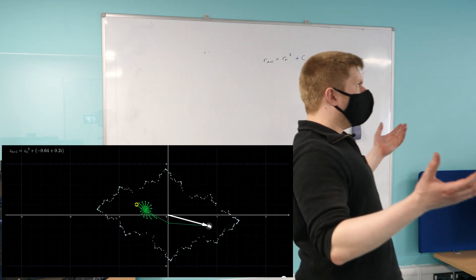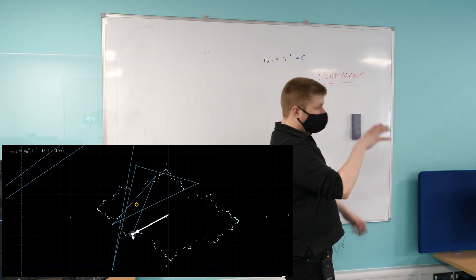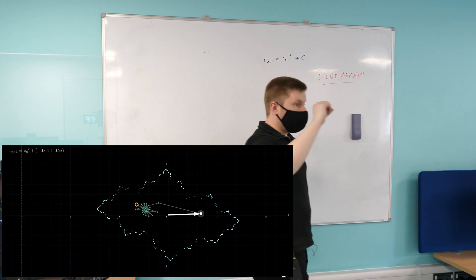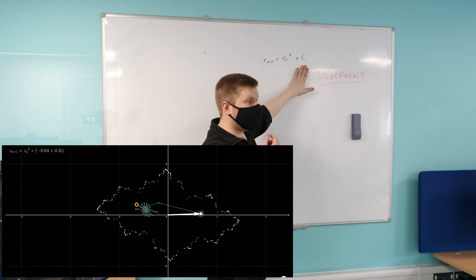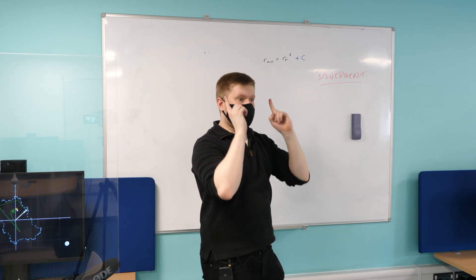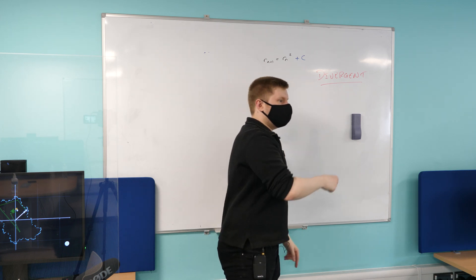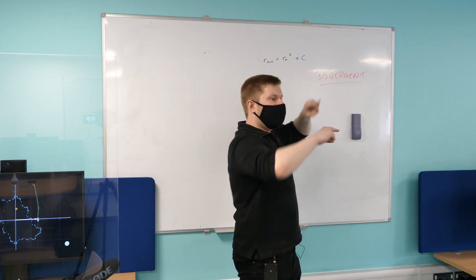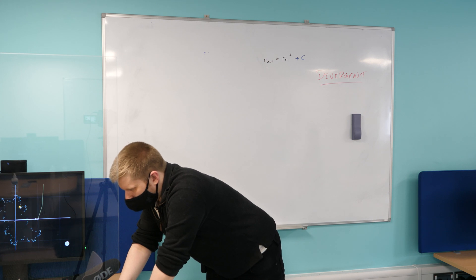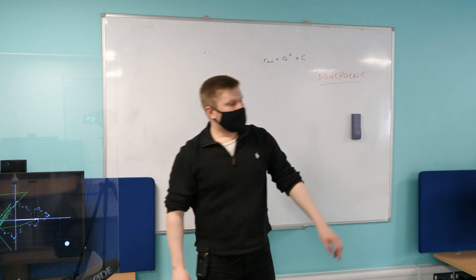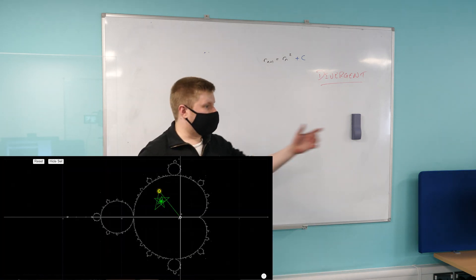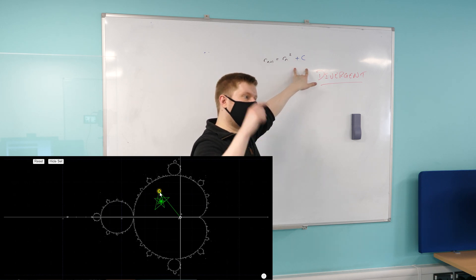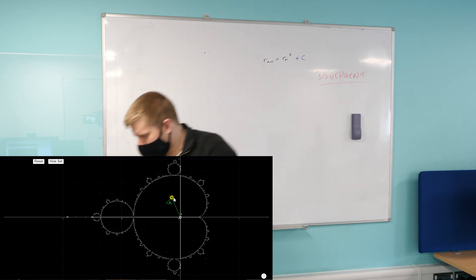Somebody called Benoit Mandelbrot came along — and he only died recently — who looked at this same idea. He said: could I find the boundary of all of the ones where I'm squaring it? So all the complex numbers that I'm adding — could I find the boundary whereby if I start with one and think about the number which I'm adding, where does that result in stability? So literally, just start with one, and think about all of the numbers which you're adding, and think about the set of those. If you think about all of the points where C is stable — you just start with one, square it and add something, square it and add something — you get a pretty pattern.